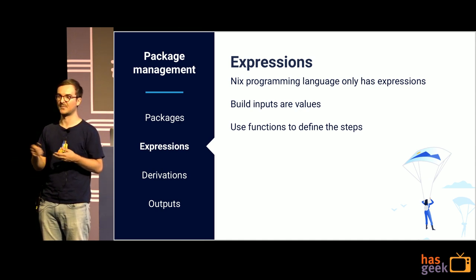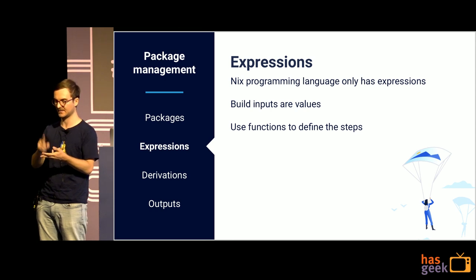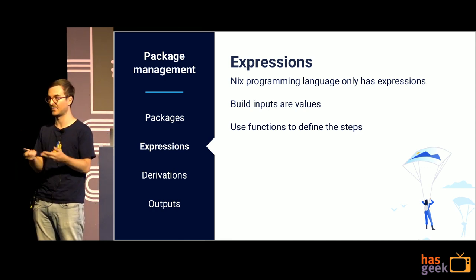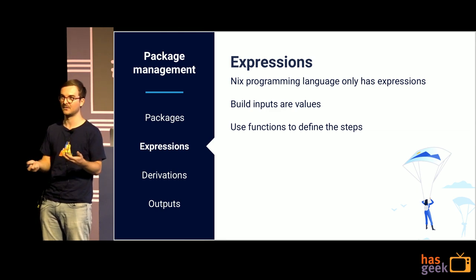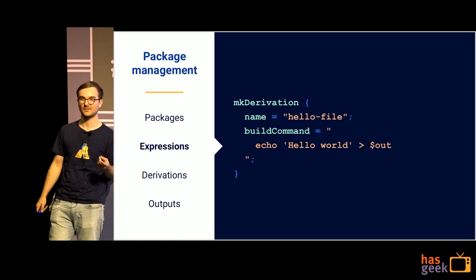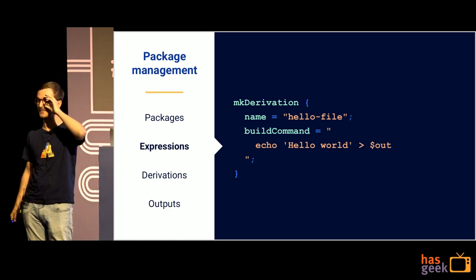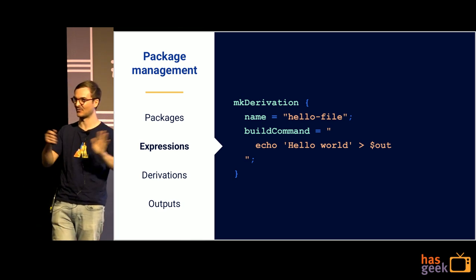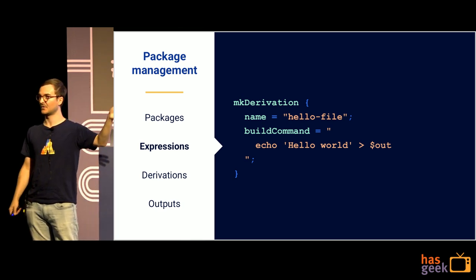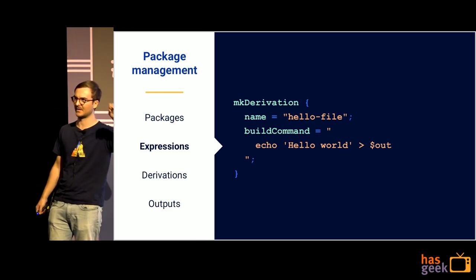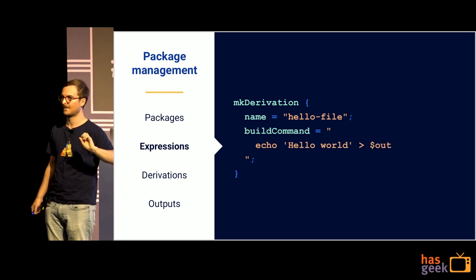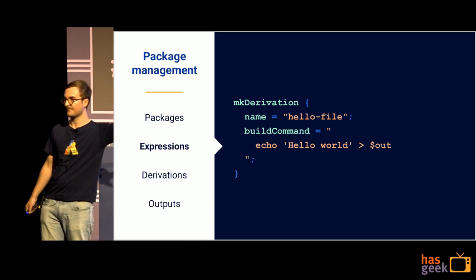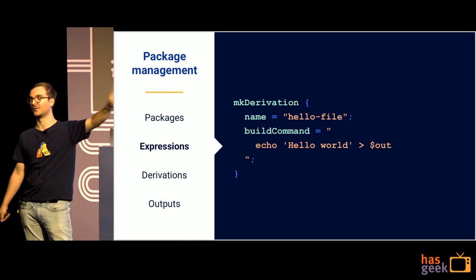Once we've got this, we can represent build inputs — source code, configuration, and dependencies — as just values in our program, and we can represent build steps as values too. These values can be produced using different functions. Here's an example in the Nix expression language — and this is the part where Nix starts showing some of its problems, but focus on the ideas. We're calling a function called mkDerivation, giving it a name and a build command, which is just a shell script. We're making a package — derivation here you can think of as a package — and here's how to actually build it. It echoes hello world into some output file.